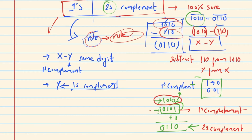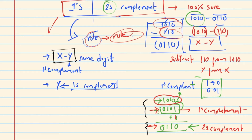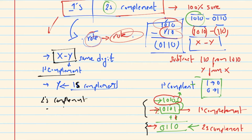One's complement: 1 is 0 and 0 is 1. Then you add 1 to get two's complement. So two's complement equals one's complement plus 1. If you remember that, one's complement is one step and two's complement is the next.